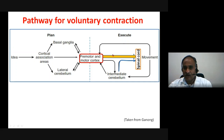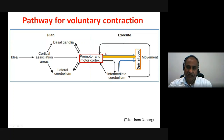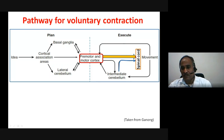It will consult the basal ganglia and lateral cerebellum, which also project onto the premotor cortex. From the premotor and motor cortex, the impulses reach the spinal cord. The movement is monitored either through the cerebellar system or through the premotor system. We are concentrating on this pathway — from the premotor cortex to the spinal cord — this is the corticospinal tract.